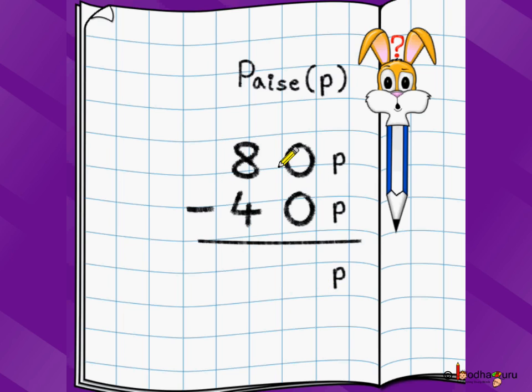Written 80 paise as 8, 0. Here, 80 paise minus 40 paise. So, how do you do it? Start from the one's position to subtraction, 0 minus 0 is 0 and then you go to the 10th position, 8 minus 4 is 4, right? So, you are left with 40 paise.